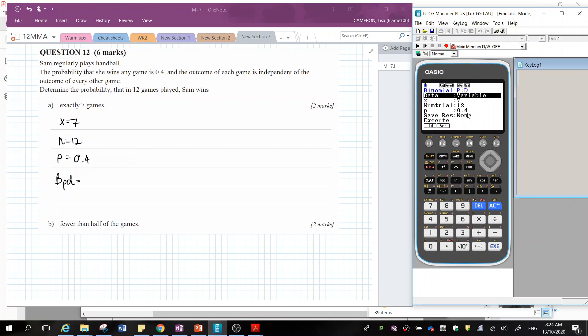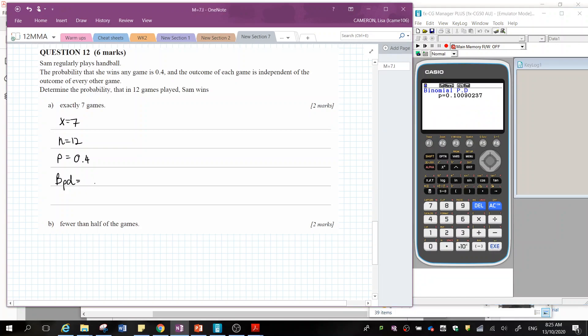Now here I've got 7, 12, 0.4 and you want it to be variable. So now I can press execute and I work out that the probability is 0.1009. Normally we go to four decimal places or if I want to express this as a percentage, it's 10.09%.